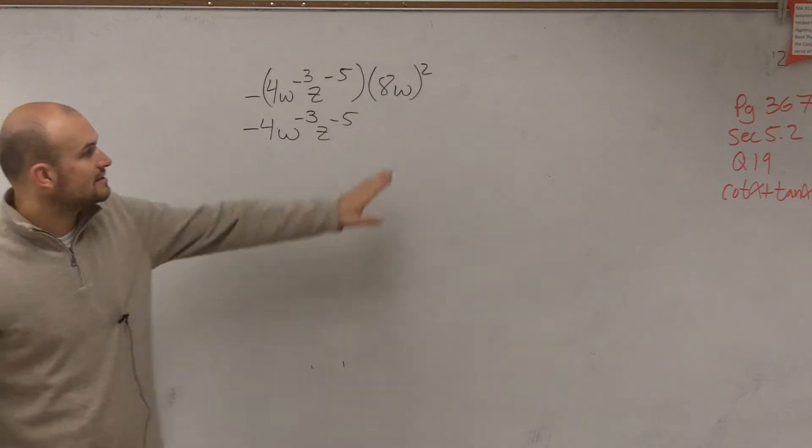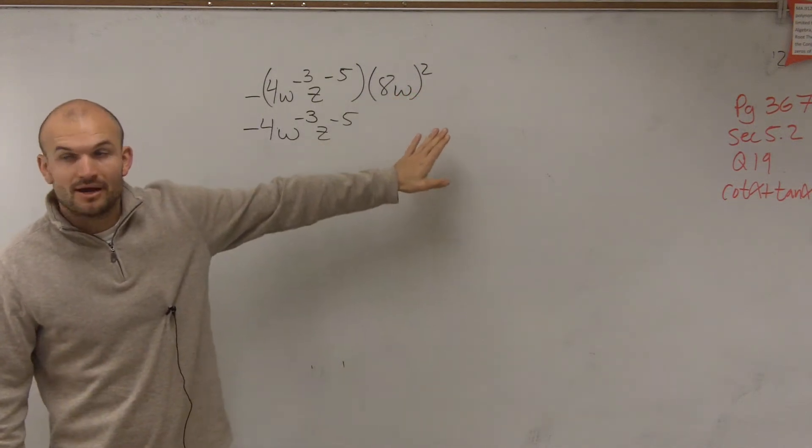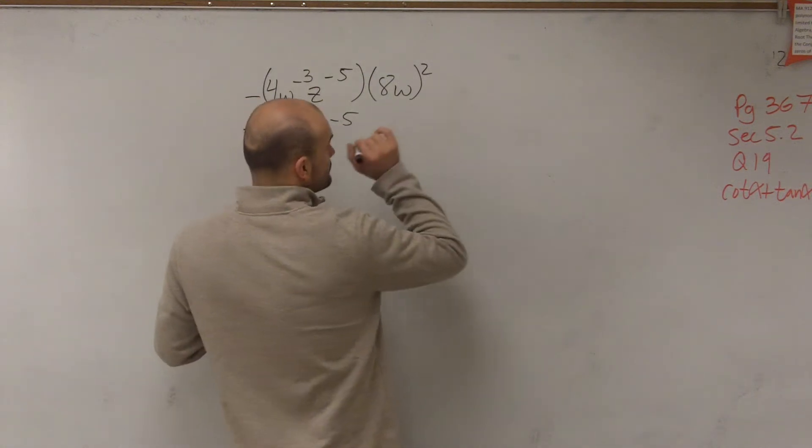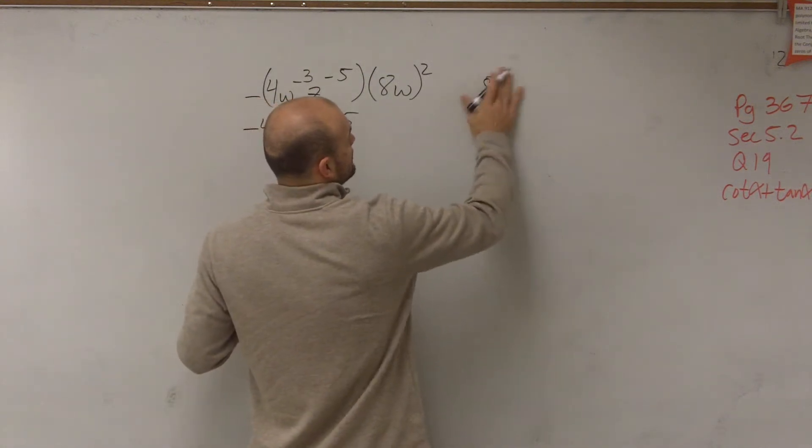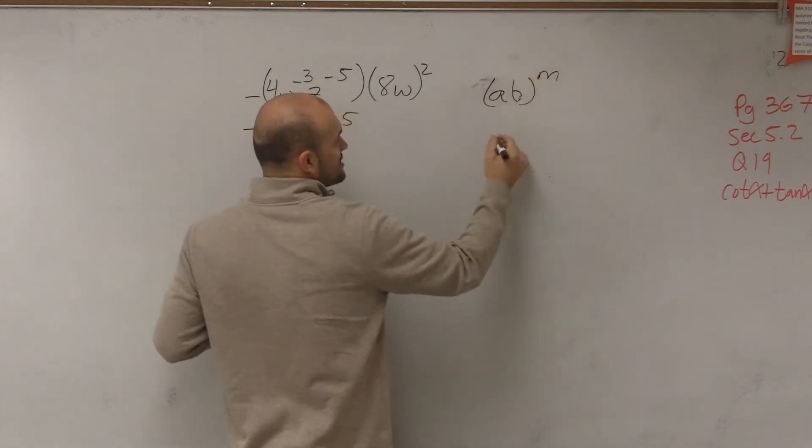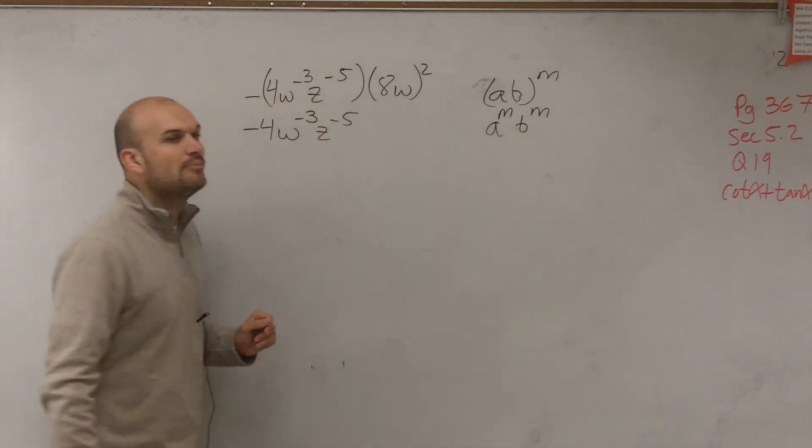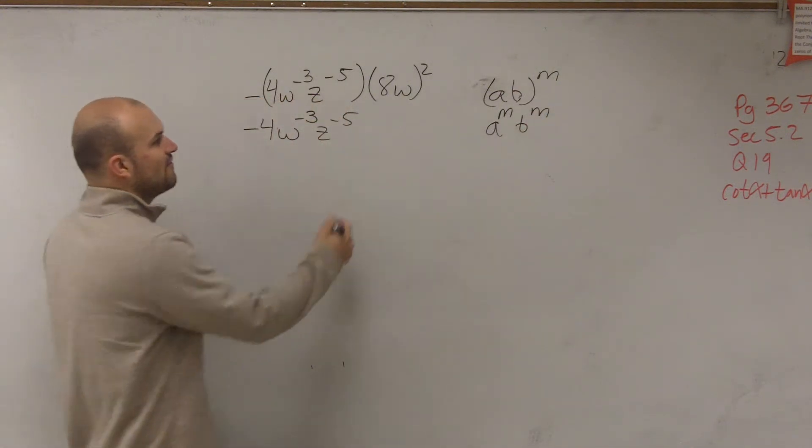Then to eliminate this parentheses, I need to square both terms. By using the power of product rule, which states if you have two terms raised to an exponent, that means it's the first term and the second term both raised to the exponent. So therefore,